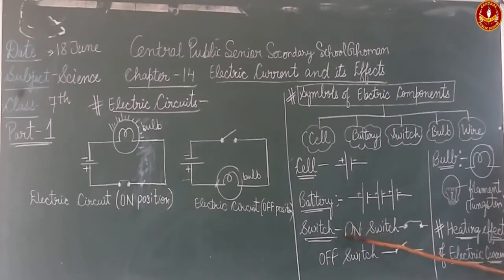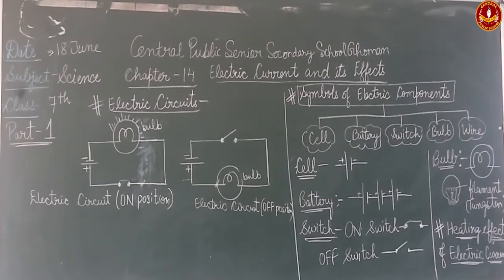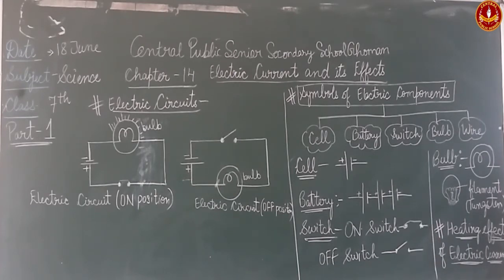Next is the switch. A switch in any electric circuit is denoted by two types: one is the on switch and the second is the off switch - the switch you use in your daily life. When the switch is on, electricity will pass through and the bulb or other electric device will work. In the off switch symbol, the two terminals are not in a closed position, so the circuit is incomplete and the bulb or other electric device will not work.